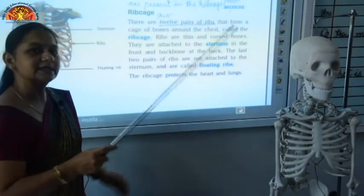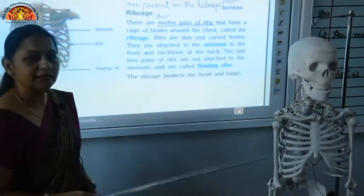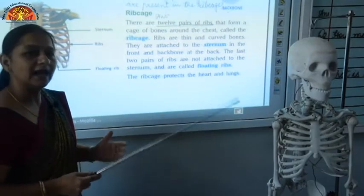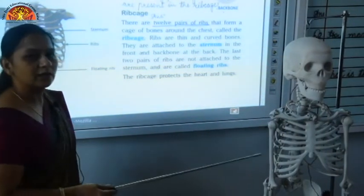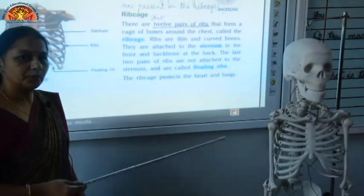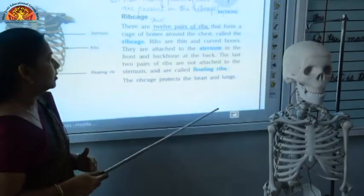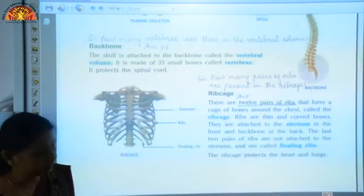So, the skull protects the brain, the ribcage protects the heart, lungs, and liver, and the vertebral column protects the spinal cord.